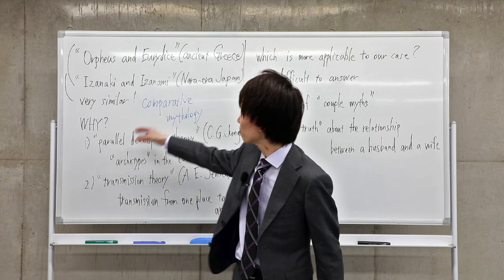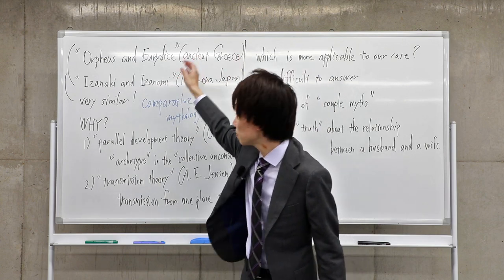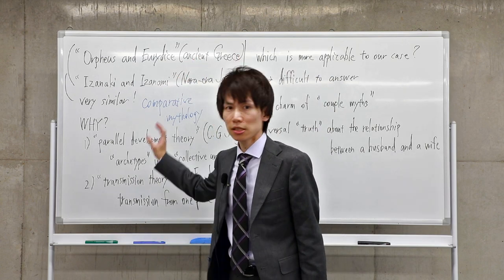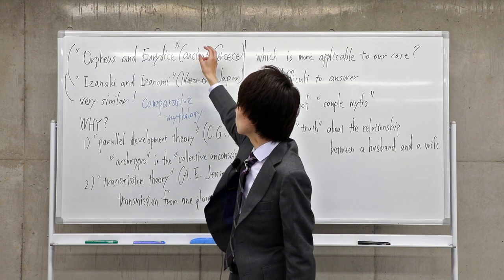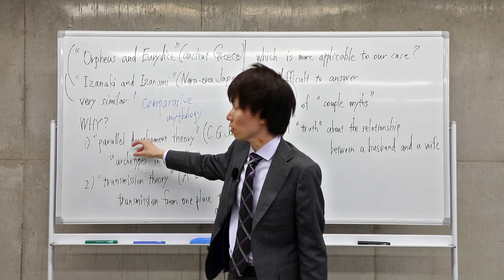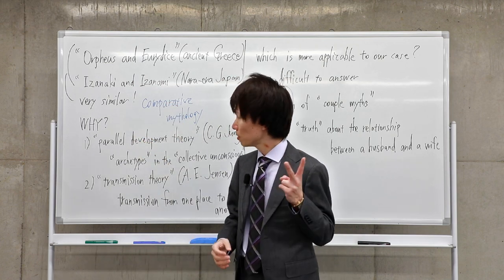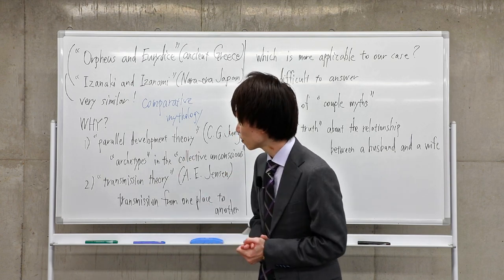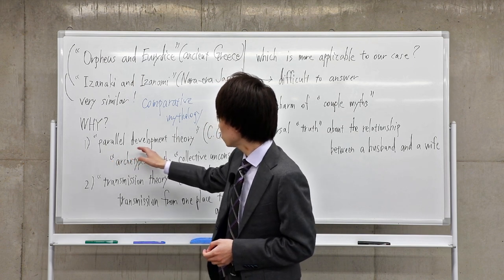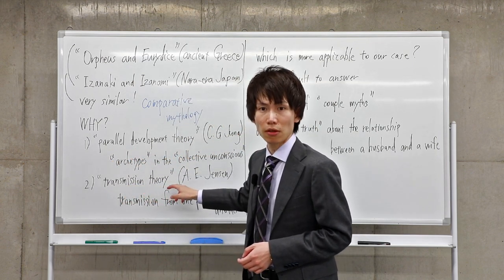So let me get back to our case, ancient Greece and Nara-era Japan couple myths. Many scholars wondered why these two stories are so similar. Roughly speaking, there are two theories to answer this question. One is parallel development theory, and the other is transmission theory.